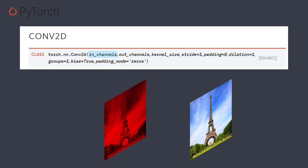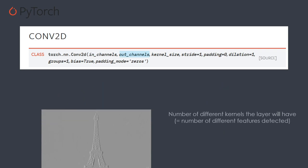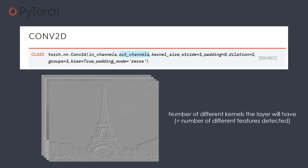We start with in_channels. If you remember, you have three different channels — this represents what you have as input. At the beginning, I will use just the red, green, and blue colors. When you stack a second convolution, you will use the out_channels of the previous layer as the input channels. The out_channels variable represents the number of kernels and the number of different images you will output at the end of the convolutional layer. The more you increase this value, the more parameters you have, and the more features you can detect at this level.